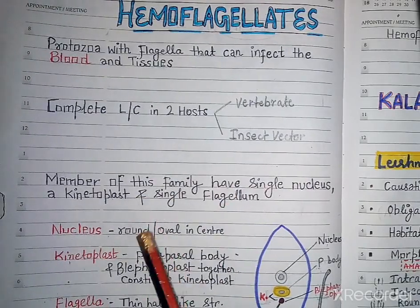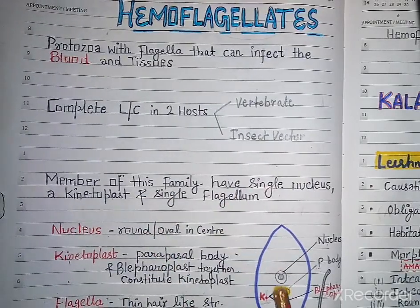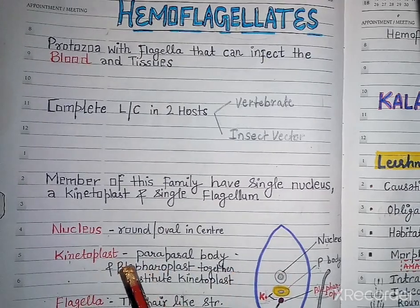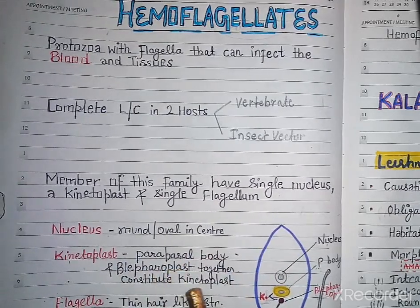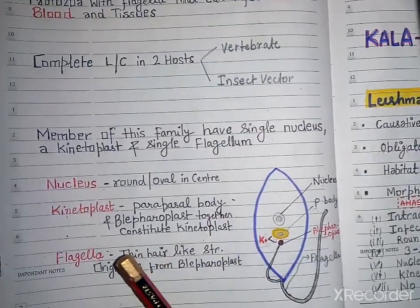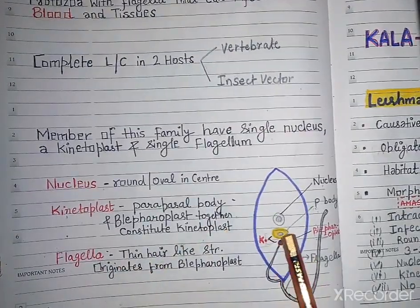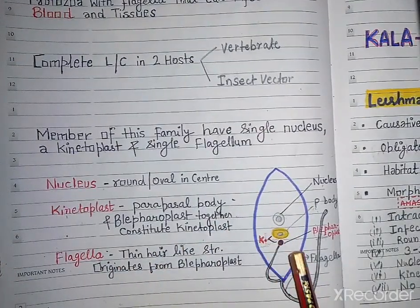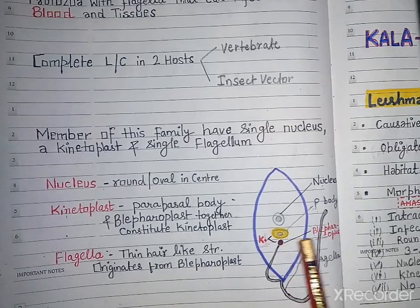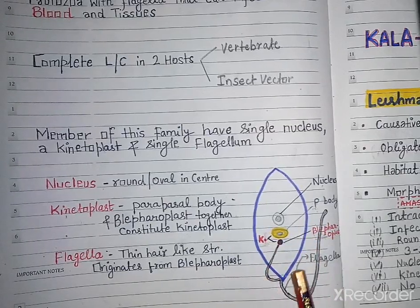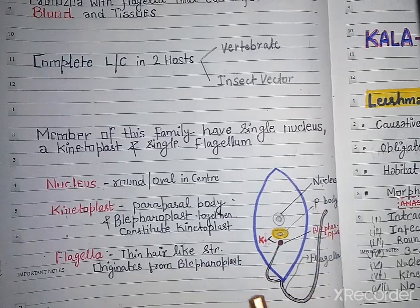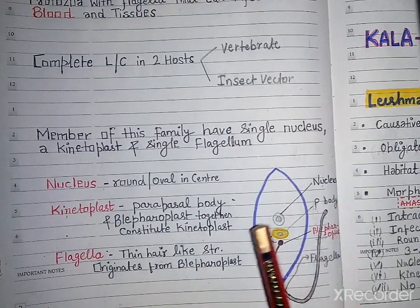The nucleus is round or oval in shape and centrally located. The kinetoplast is made up of the parabasal body and the blepharoplast together. The parabasal body is a rod-like structure and the blepharoplast is a dot-like structure. From the blepharoplast, a thin hair-like structure arises known as the flagellum, which helps in motility.